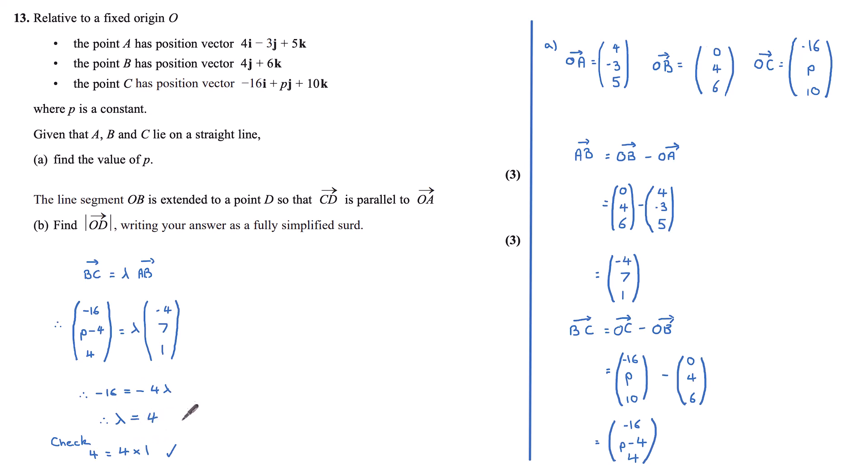Now we know lambda equals 4, we can look at our j components and set them equal to get p minus 4 equals 4 times 7. 4 times 7 is 28. And so p minus 4 being 28, adding 4 to the right-hand side gives us a p value of 32.